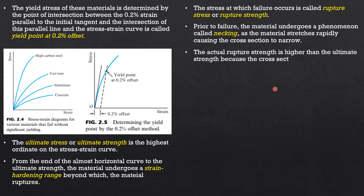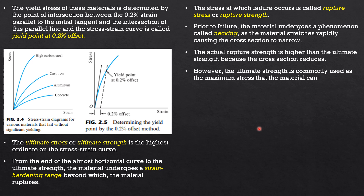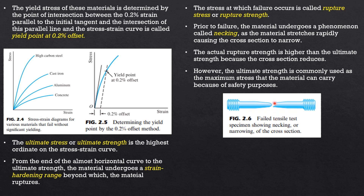The actual rupture strength is higher than the ultimate strength because the cross section reduces at rupture. The load at rupture divided by the reduced area gives a higher stress than when divided by the original area. However, it is the ultimate strength that is used for safety purposes. The illustration shows a failed tensile test specimen with necking — the original area is larger than the area at rupture.